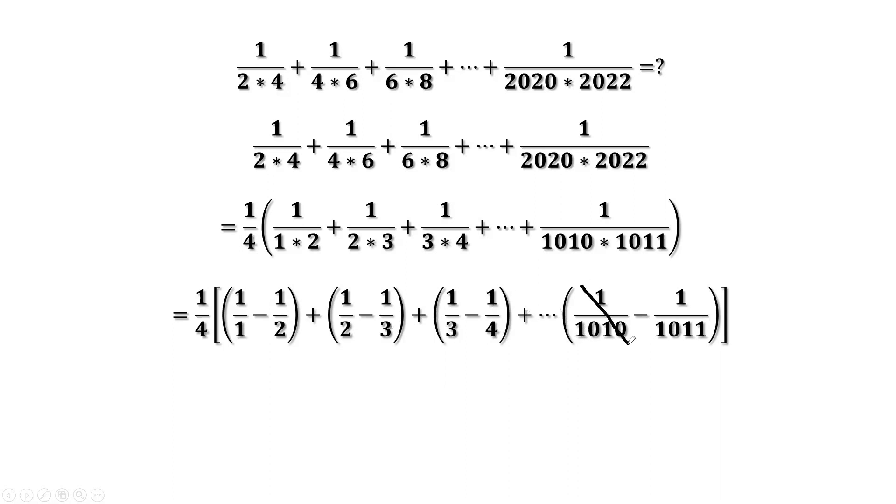The only thing left is the first term, 1 over 1, and the last term, negative 1 over 10, 11.